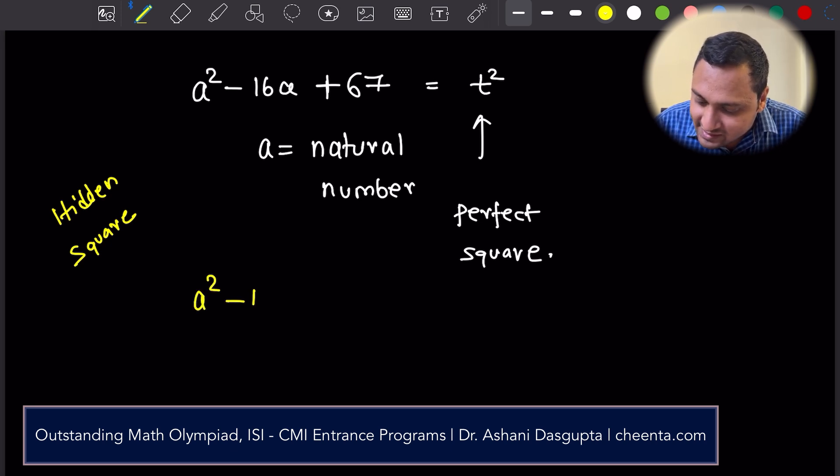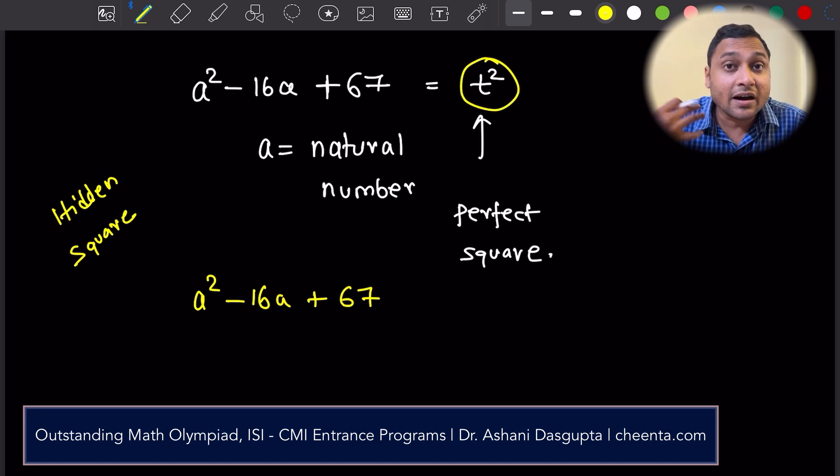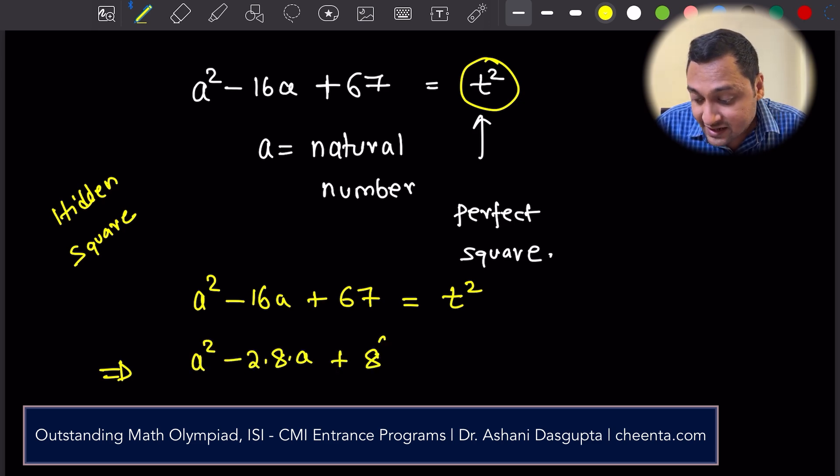a squared minus 16a plus 67. The right-hand side needs to be a perfect square. So, I write it as some t squared. What I can do is,